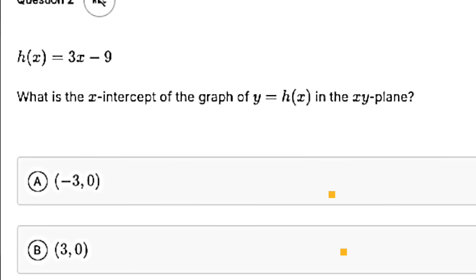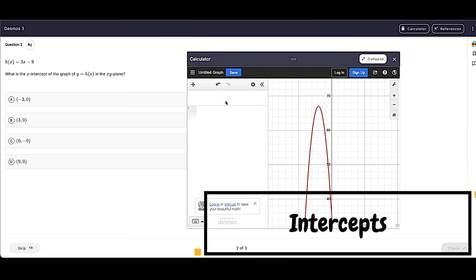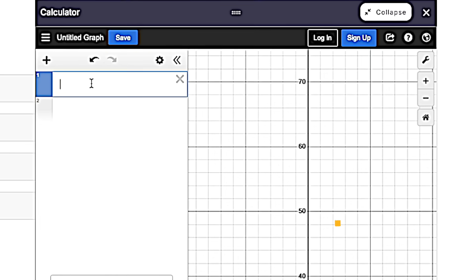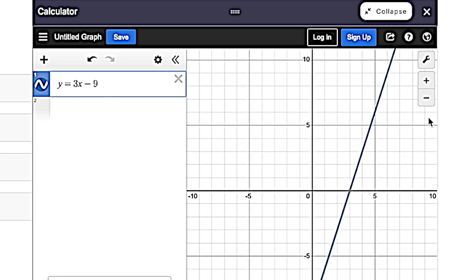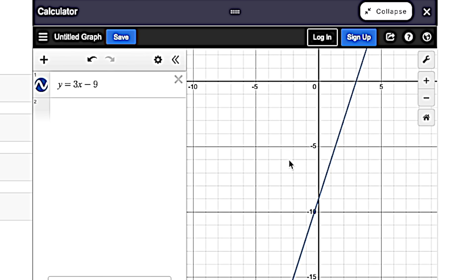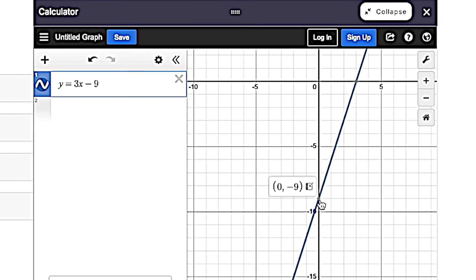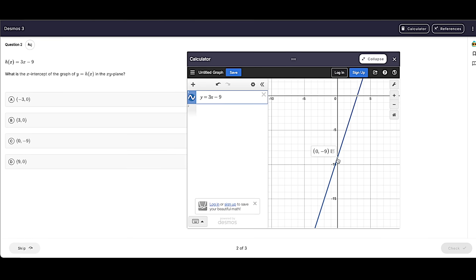We can also easily find intercepts. Again, this is a visual thing. So we put in our function or we can put y instead of h of x here. And it's asking about the x intercept. So we just go to the x axis and it will point out the x intercept to us, which is three, zero. If we were looking for the y intercept, we would just look for where it touches the y axis. And again, it'll just point it out to us. So that would be zero negative nine.